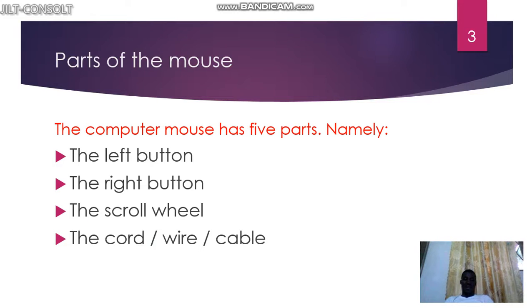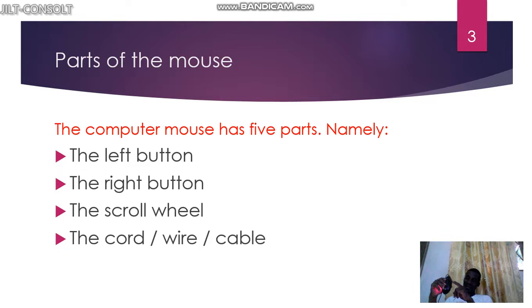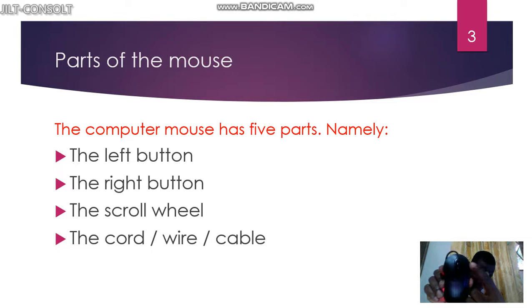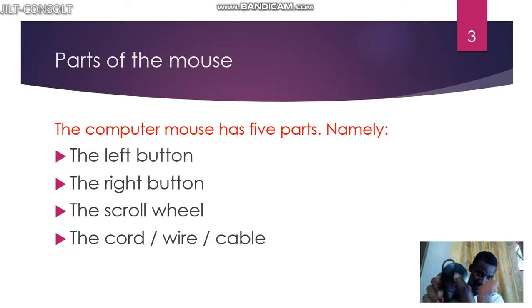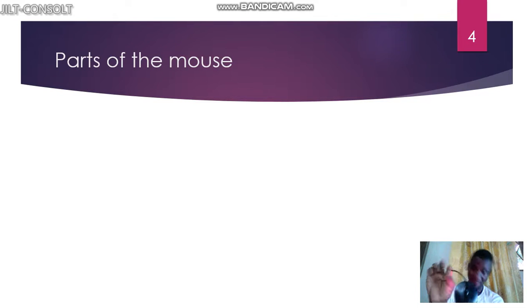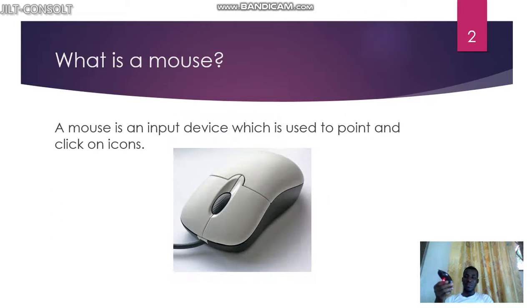The computer mouse has five main parts. The first one is the left button, the right button, and the wheel. We also have the mouse body and the cord — some people call it a wire.